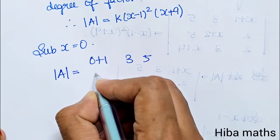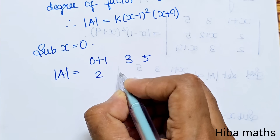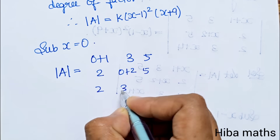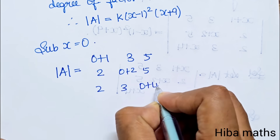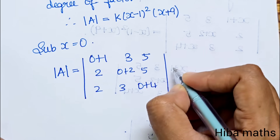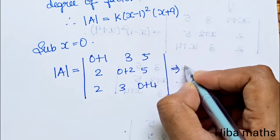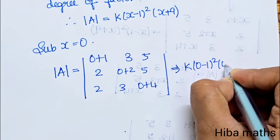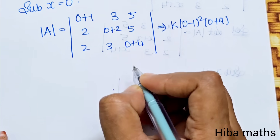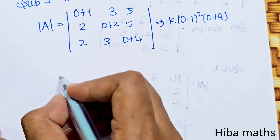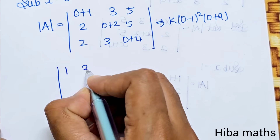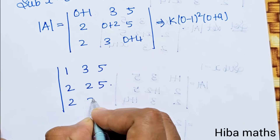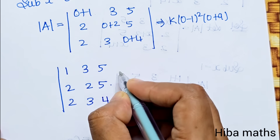Substituting x=0, the determinant becomes rows (0+1, 3, 5), (2, 0+2, 5), (2, 3, 0+4), which is the determinant of rows (1, 3, 5), (2, 2, 5), (2, 3, 4).